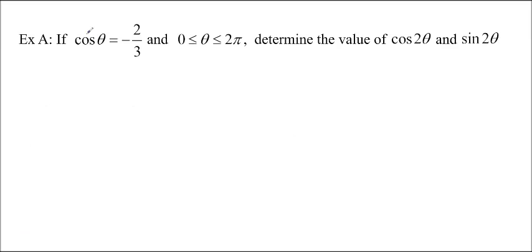We're going to use them. So this question asks us if cos theta equals negative 2 over 3 and 0 is less than or equal to theta, less than or equal to 2 pi. Determine the value of cos 2 theta and sine 2 theta. So cos 2 theta is really easy because we can do it with just cos theta.